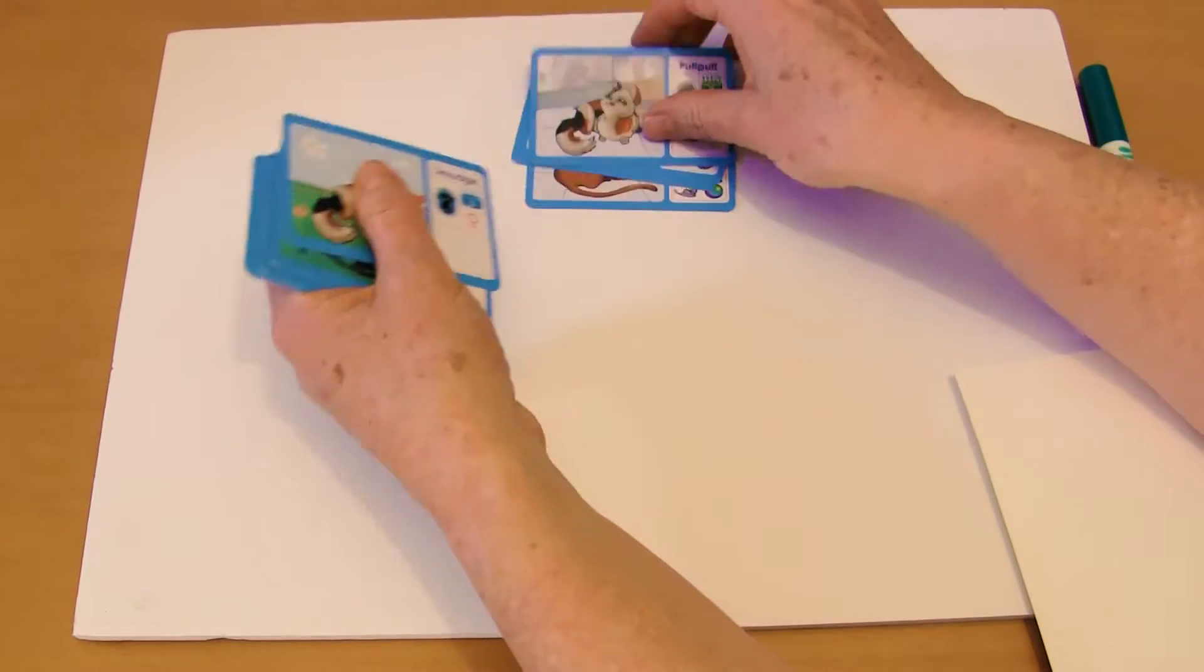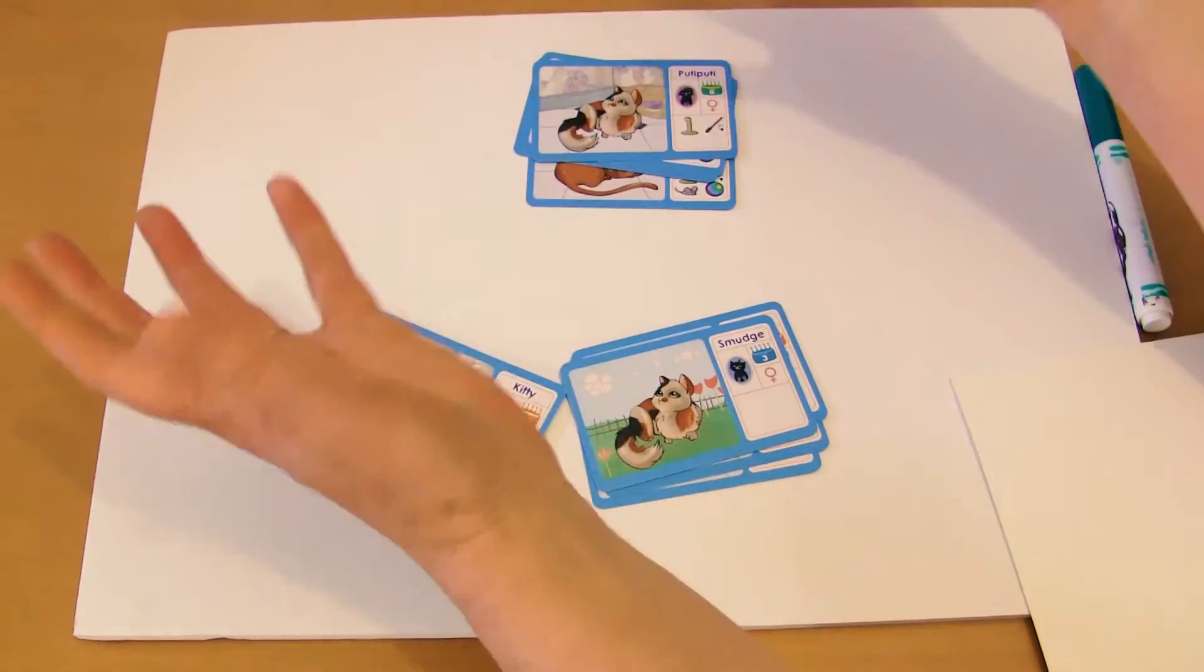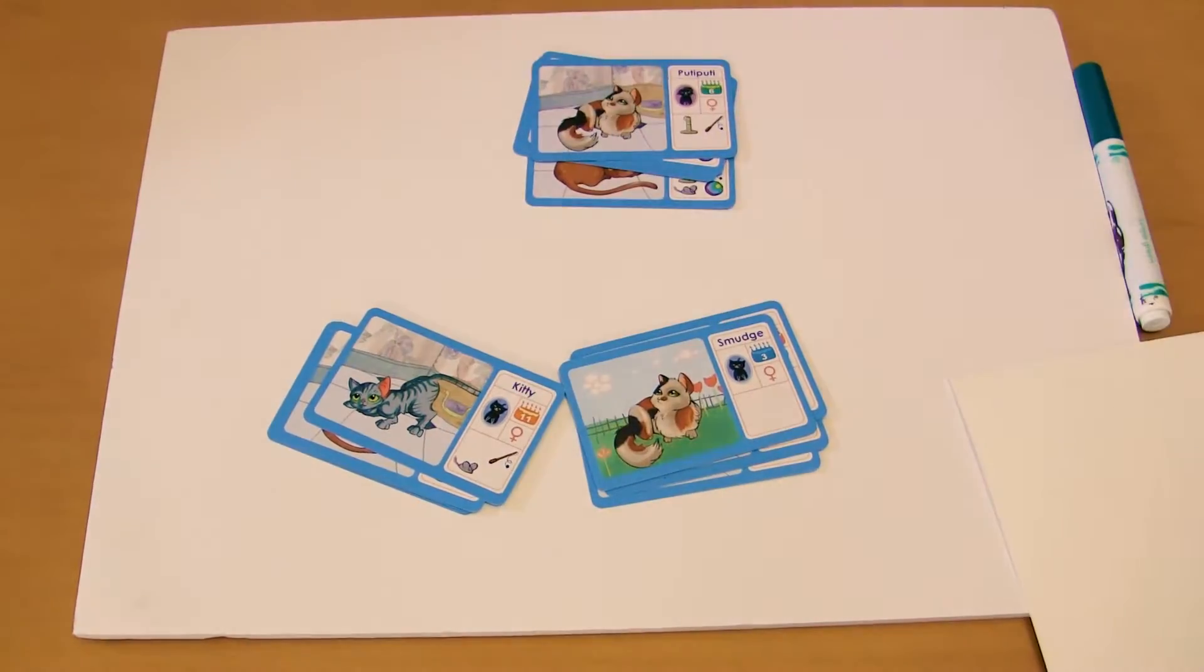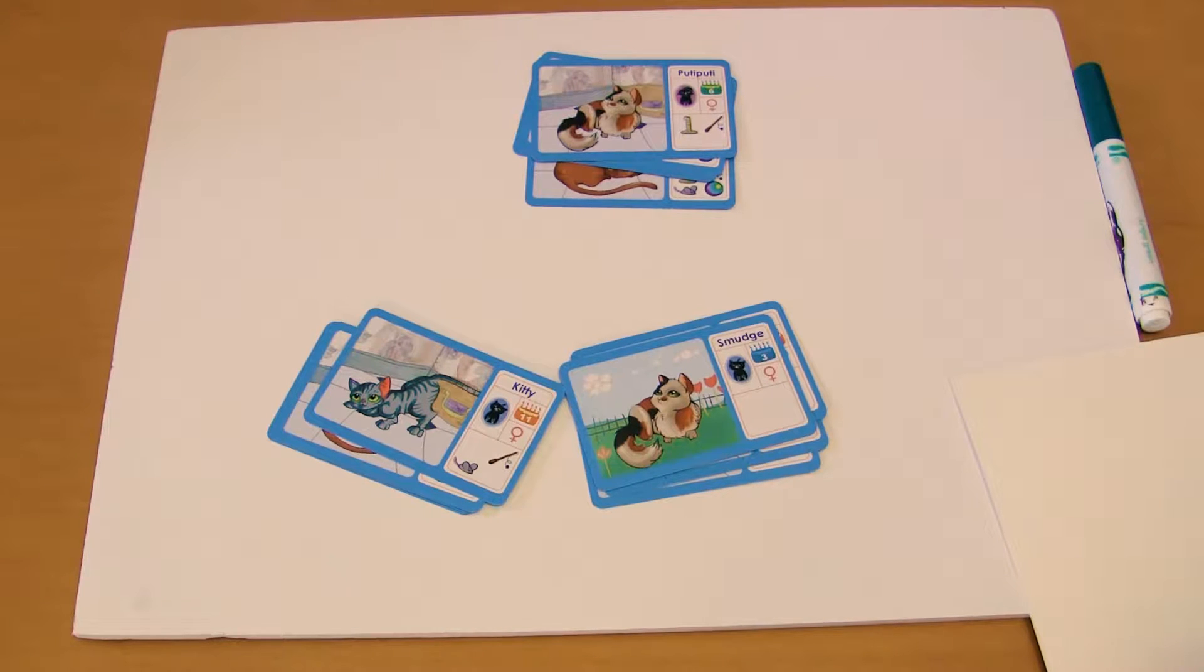In this exercise, the children in groups or individually have some cat cards to work with, and you ask the children to find a group of cats that has a total of four toys.